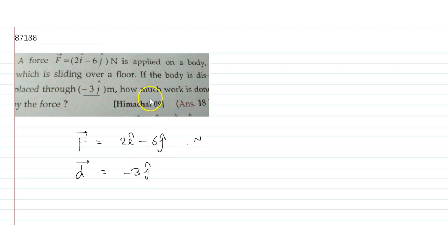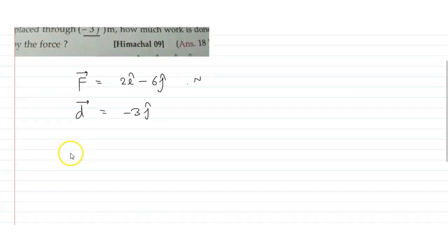To find the work done by the force, we use F vector dot d vector. The force is 2i minus 6j, and the displacement is minus 3j. We need to calculate the dot product of these vectors.